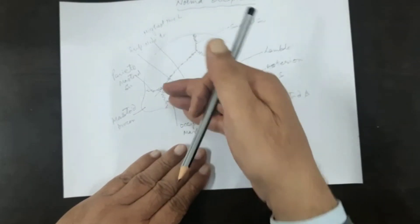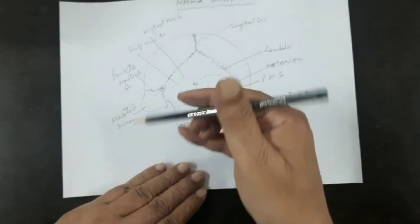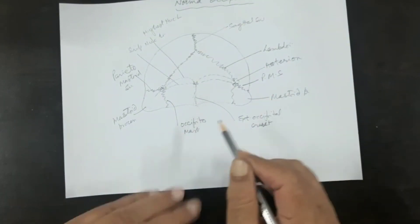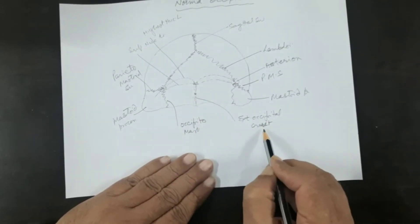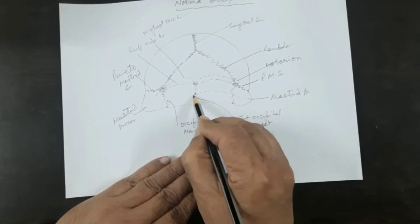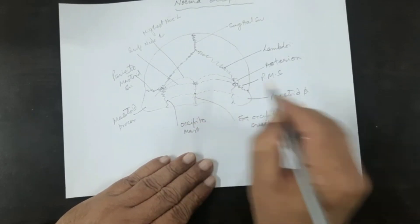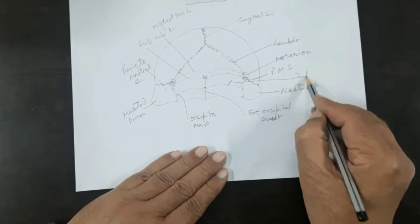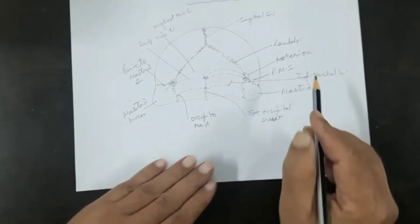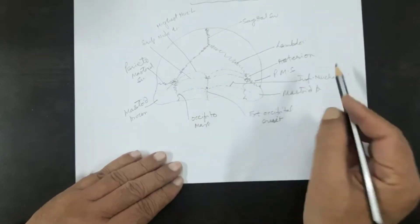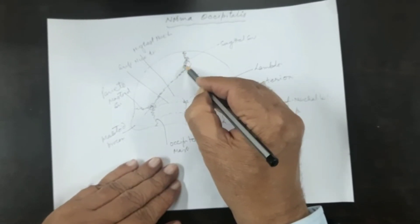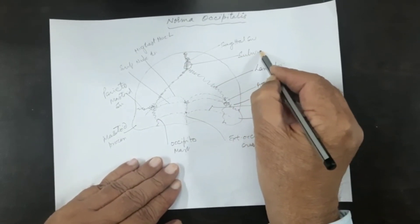Below the superior nuchal line, the soft tissue and skin is part of the neck, and above it is part of the head. From almost the middle of the external occipital crest another line goes towards the mastoid process — that is the inferior nuchal line. This is the lambda, and in this specimen you can see a sutural bone here at the posterior end of the sagittal suture.